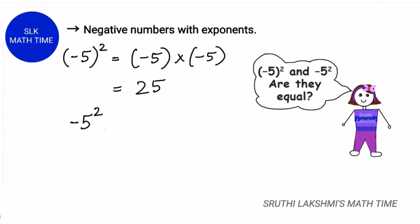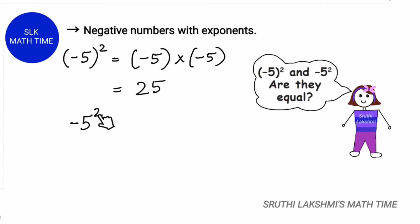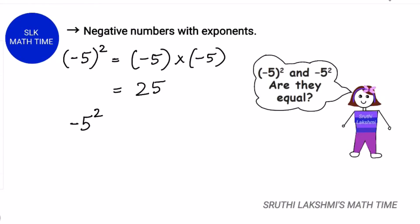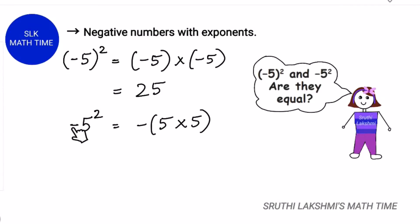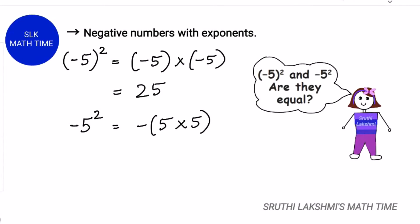We have to look at what is next to the exponent. Here 5 is next to the exponent 2, so we only raise 5 to the second power. The minus sign is separate, so it's minus 5 into 5. We apply the minus sign and 5 into 5 is 25, giving us negative 25.